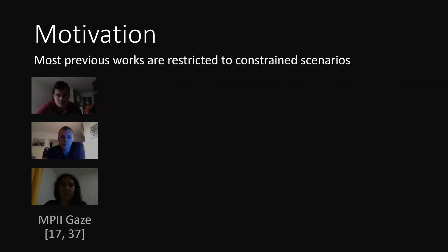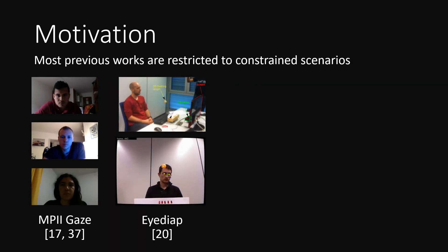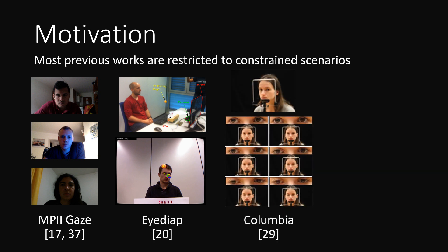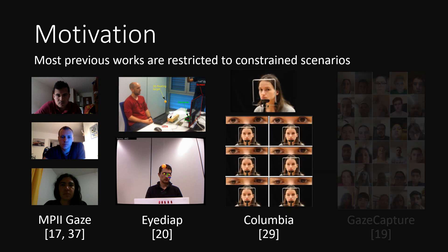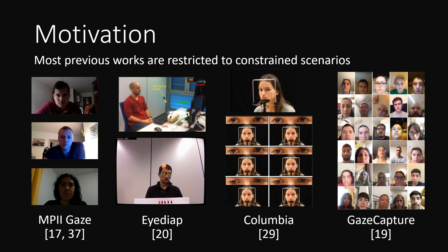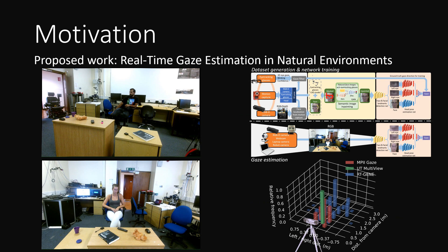Most previous works are restricted to constrained scenarios where the subject is in close proximity to the camera and has a small movement range. In this paper we address the problem of real-time gaze estimation in natural environments with minimal restrictions for the subject's gaze and appearance.